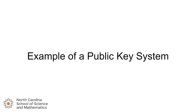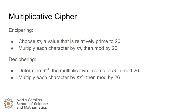Let's look at an example of a public key system that builds on something we already know: the multiplicative cipher. We could choose a value m that is relatively prime to 26, and to encipher, we take each character n in the message, multiply it by m, and mod by 26. To decipher, the recipient needs to know m-inverse — the multiplicative inverse of m in mod 26. If my enciphering key was 3, I'd know that m-inverse is 9, then multiply each character by m-inverse mod 26 to recover the plain text.